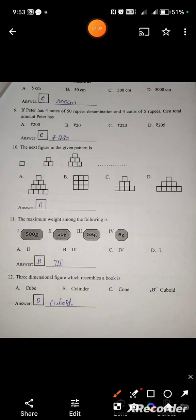The maximum weight among the following is 500 grams, 50 grams, 5 kg, 500 grams. The highest is 5 kg. Option is B. The 3 dimensional figure which resembles a book is cuboid.